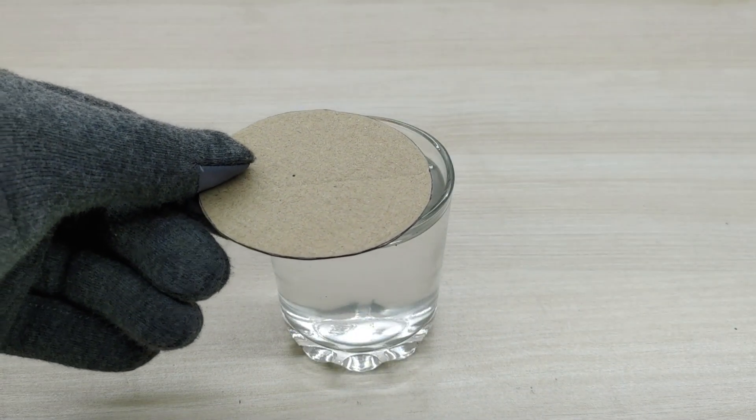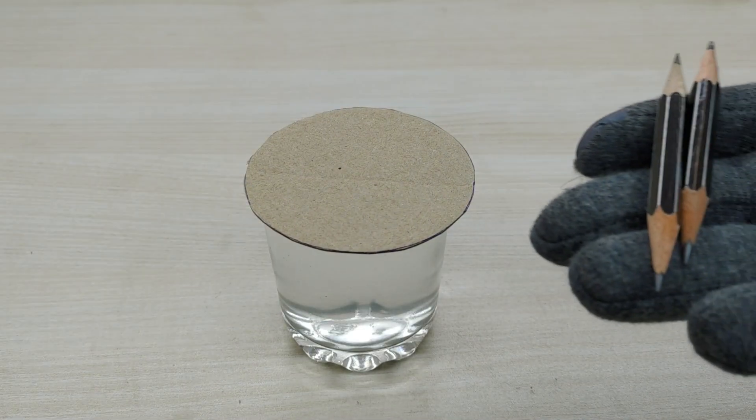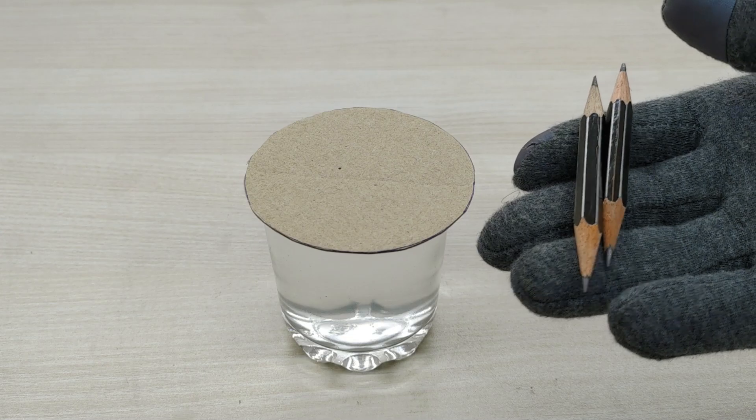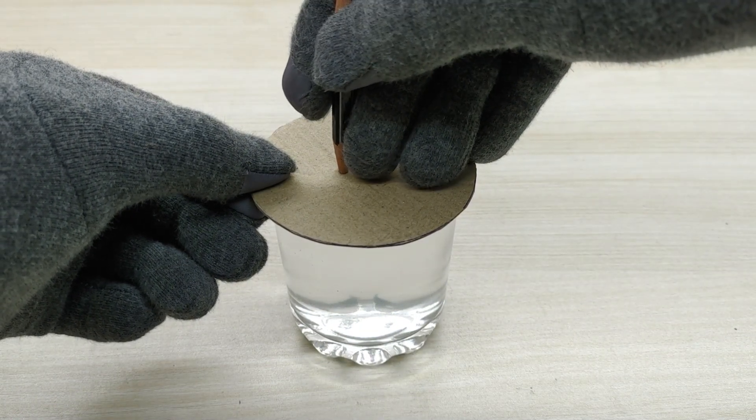Now cover the glass with a piece of cardboard. Take two pencils sharpened on both sides. Insert both pencils into water through the cardboard.